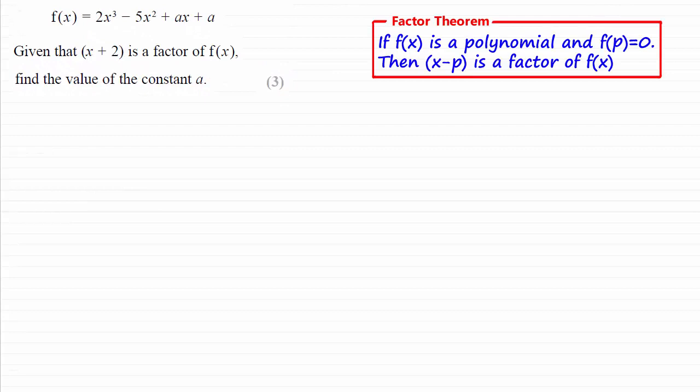Just as a brief reminder, if f of x is a polynomial and f of p equals 0, then x minus p is a factor of f of x.